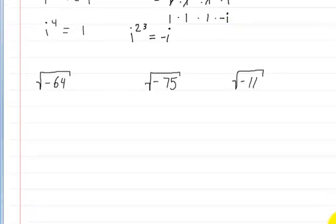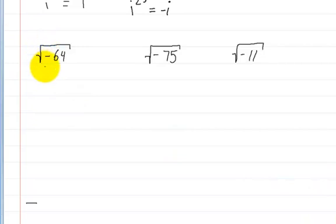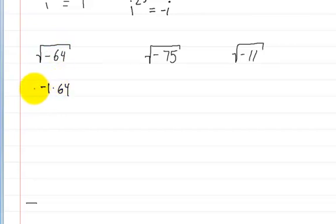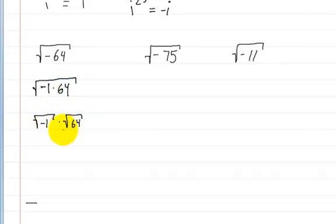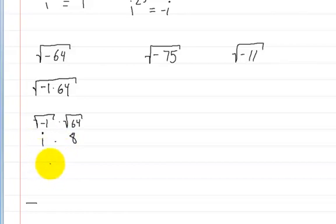Now, what happens when they ask us to rewrite numbers like the square root of negative 64? First, we separate the negative 1 from the 64, giving us the square root of negative 1 times the square root of 64. The square root of negative 1 is i, and the square root of 64 is 8, so the answer is 8i.